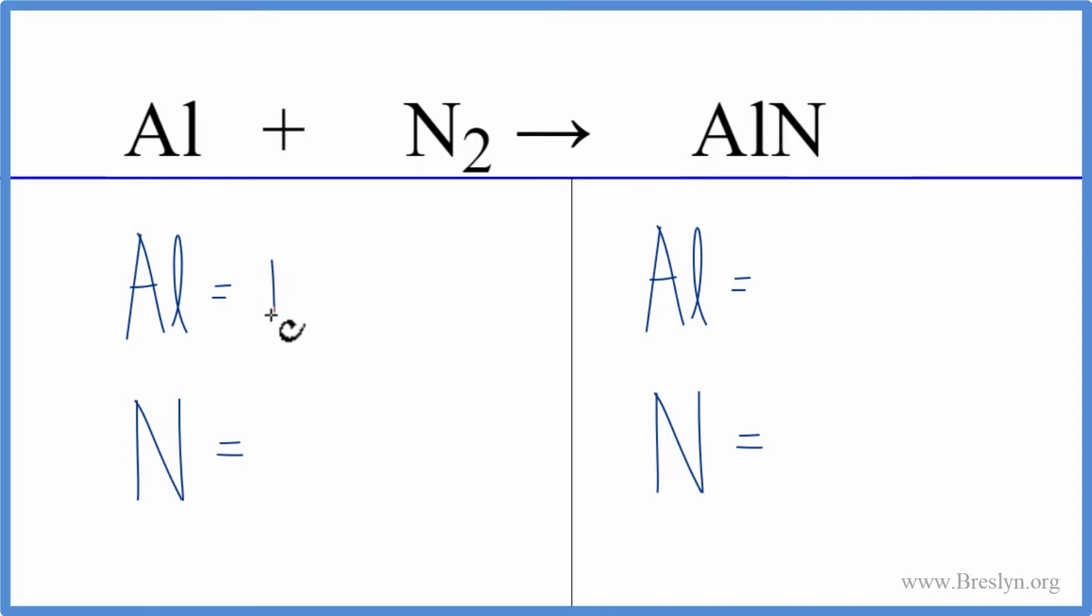We have one aluminum atom, two nitrogen atoms. On this side we have the one aluminum, you could call it aluminium if you're from outside the US, and then one nitrogen.